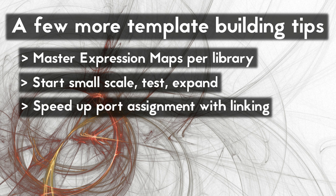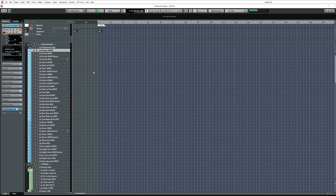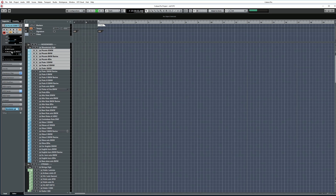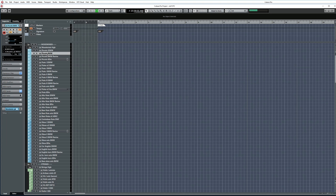Assigning MIDI ports to your MIDI tracks. Most of you probably know this clever linking function in Cubase where you can select several things at once and then hold down SHIFT and ALT to edit them all simultaneously. This also applies to assigning MIDI ports for your template. You can select a bunch of tracks at the same time, then hold down SHIFT and ALT keys and click in the MIDI port assignment field in the Inspector tab. The port you select will now be assigned to all of your selected tracks.